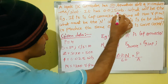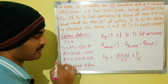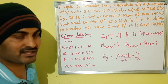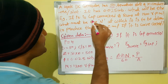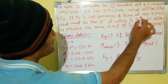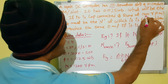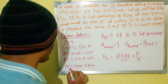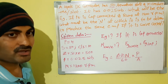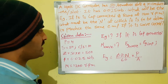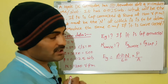Flux per pole is 0.025 Webers. Speed of the machine when it is lap connected is N equals 1200 RPM. The machine is lap connected; we need to find the generated EMF.